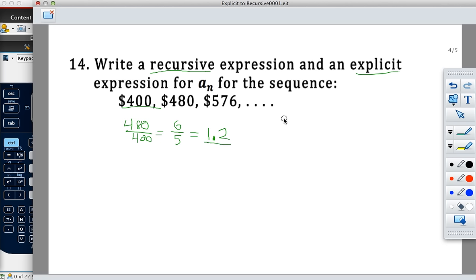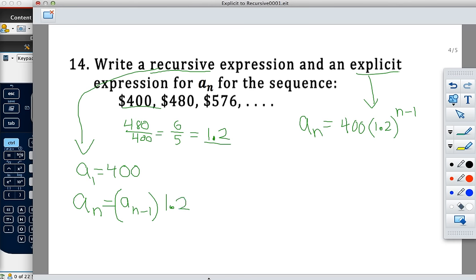Now I know my first term is 400. My common ratio is 1.2. So for the explicit formula, I'm going to have A sub n equals 400 times my common ratio, 1.2 raised to the n minus 1 power. Now for the recursive formula, I'm going to say A sub 1 equals 400. Do not forget with the recursive formula, you have to include your first term, your A sub 1. So the regular equation would be A sub n equals my previous term, A sub n minus 1, times my common ratio of 1.2. So there's the two formulas.